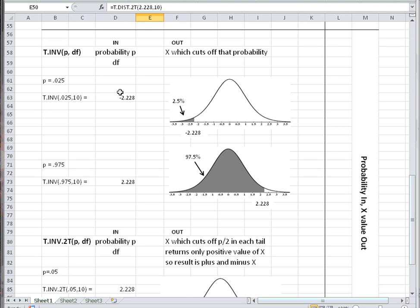The INV functions have as input a probability or an area and the degrees of freedom, and the result is the x value or t value which cuts off that probability.